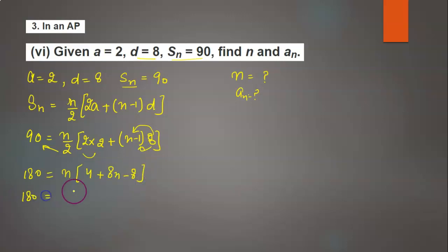Further simplify it. It equals n times [8n minus 4]. So first of all we write 8n minus 4.